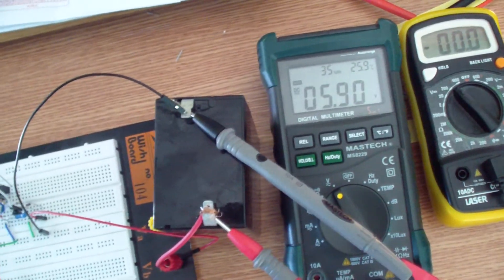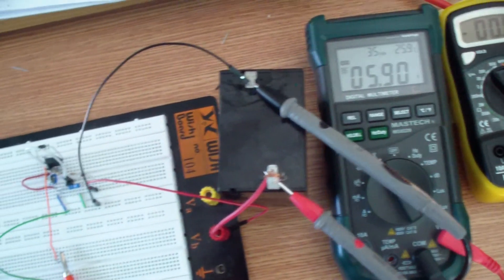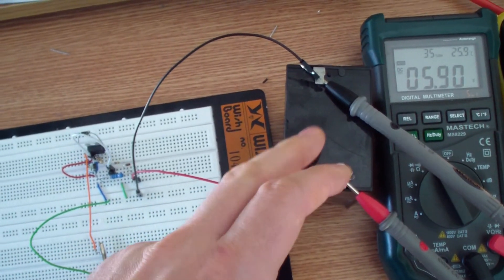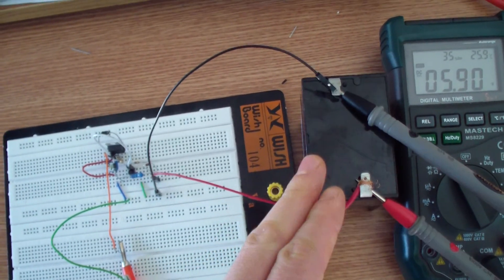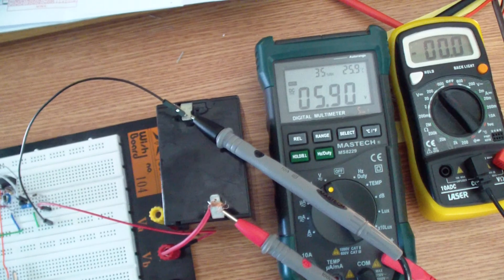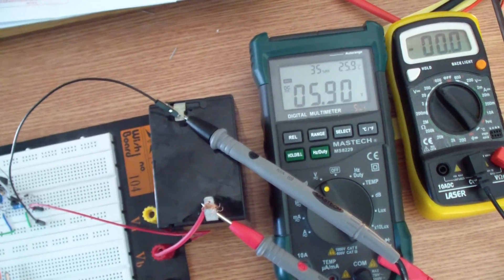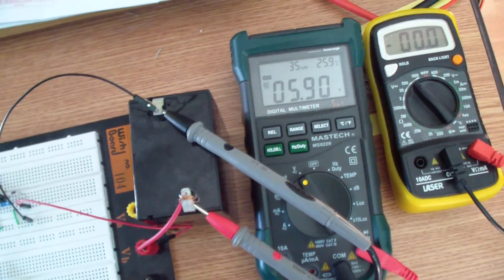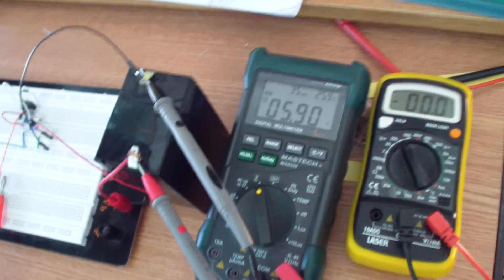And the rest of the setup is the same. The 6 volt lead acid battery is connected in the same way to the circuit. The voltage on its terminals is around 5.9.